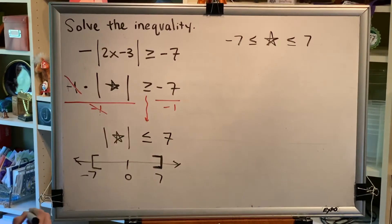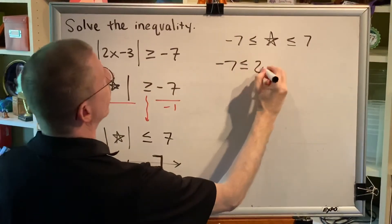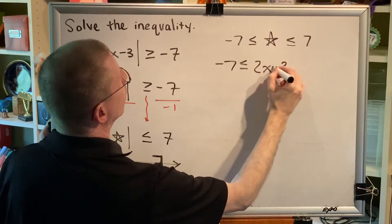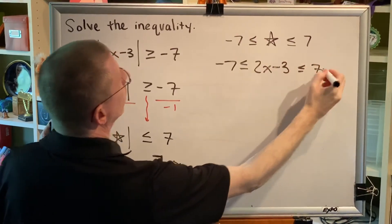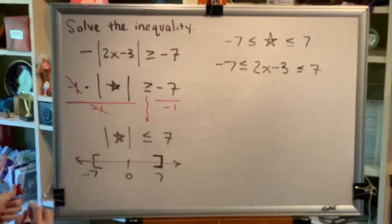Now put star back the way it was. In this problem, star used to be 2x minus 3. Now solve the combined, also known as three-part inequality.